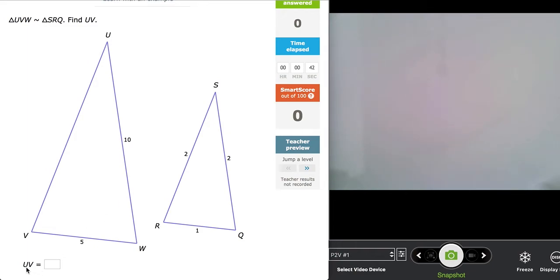What we're looking for is the side length UV. Some of you can already look at this and quickly tell what that value is. Now let's come up with a strategy to figure that out. Here, triangle UVW is similar to triangle SRQ.